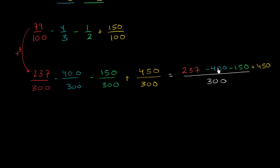And so let's see if we could simplify this a little bit. We're subtracting 400 and we're subtracting 150. So these two would be the same thing as subtracting 550. And then we have a positive 237 and we're adding it to a positive 450.